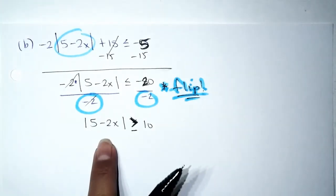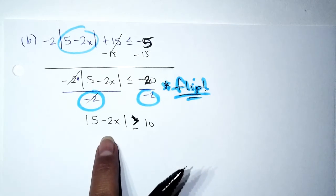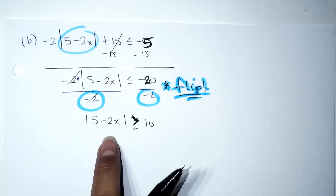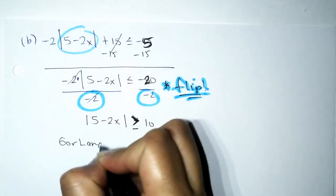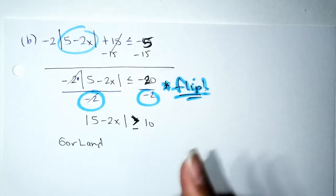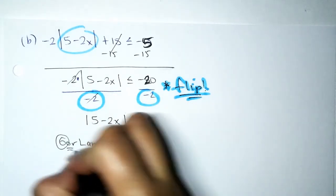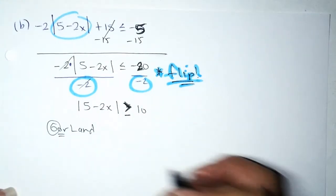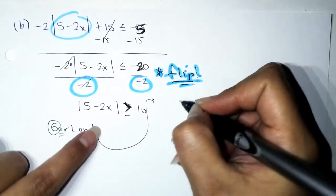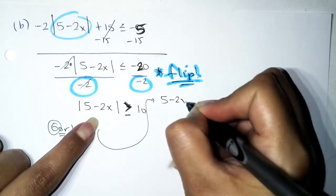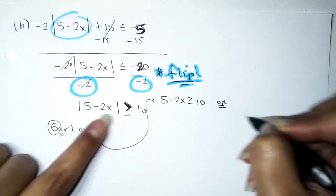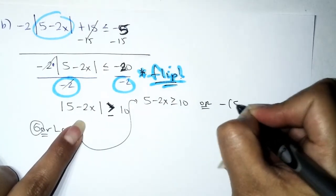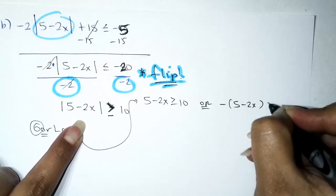Now that the absolute value is isolated, we GORLAND it. We have a greater-than-or-equal-to symbol, so it's an OR kind of problem. We set it up as: (5 − 2x) ≥ 10 OR −(5 − 2x) ≥ 10.